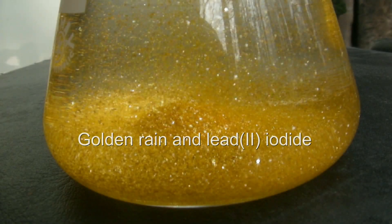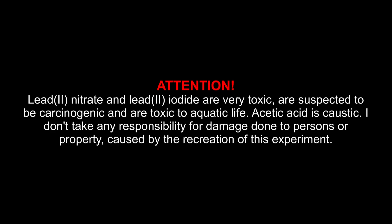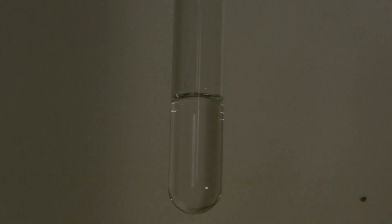Golden rain and lead(II) iodide. Attention: Lead(II) nitrate and lead(II) iodide are very toxic, are suspected to be carcinogenic, and are toxic to aquatic life. Acetic acid is caustic. I don't take any responsibility for damage done to persons or property caused by the recreation of this experiment.